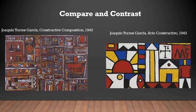Neoplasticism was coined by Piet Mondrian, who was also a huge influence on Garcia. Garcia would implement his own things into Neoplasticism, such as he added Cubism and other things into it.